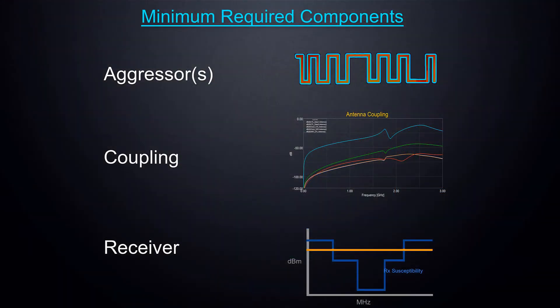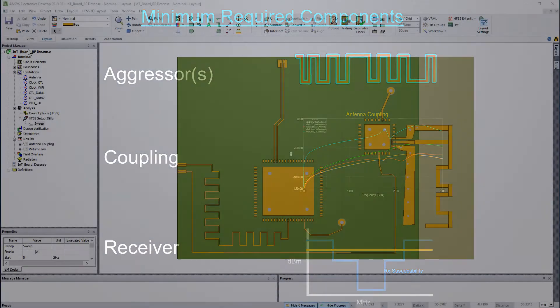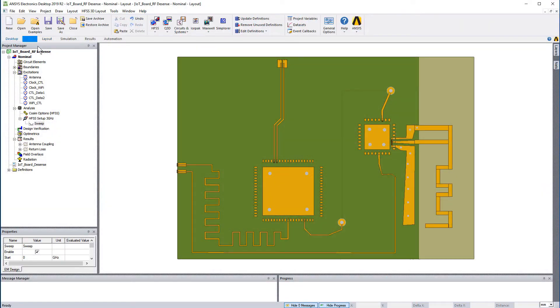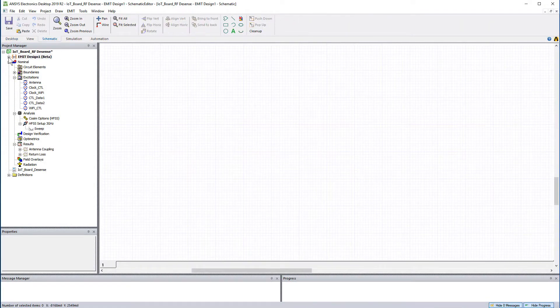Remember our minimum requirements? I'll show you an efficient technique to characterize the aggressors, compute the coupling, and define the receivers. We'll assign these in parallel. In Electronics Desktop, insert an EMIT design.